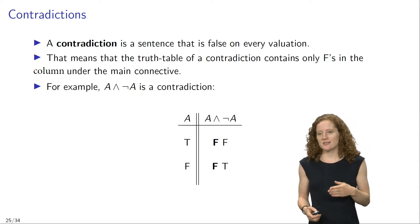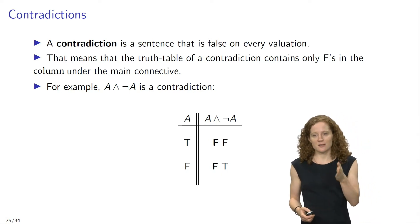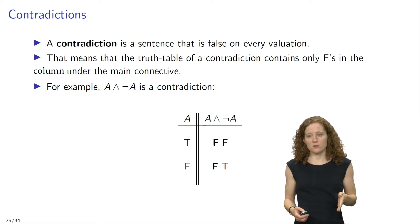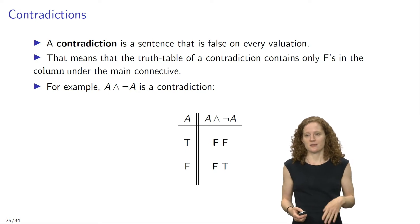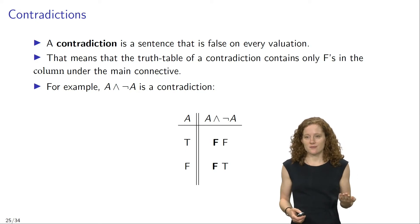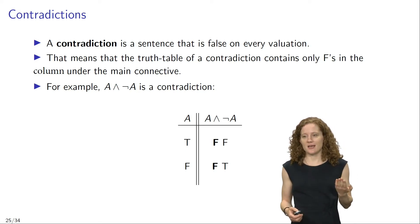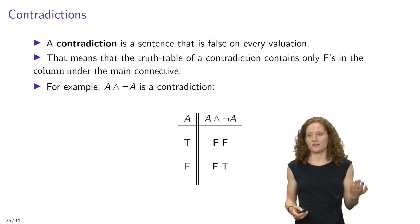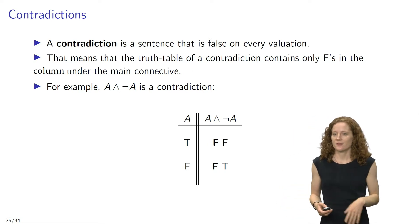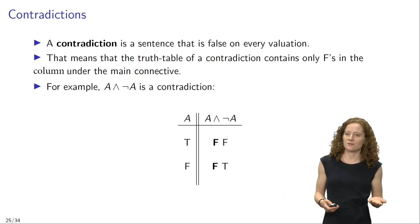You can see that this column contains only Fs, and that means that the conjunction 'a and not a' is a contradiction. It is false on every possible valuation.